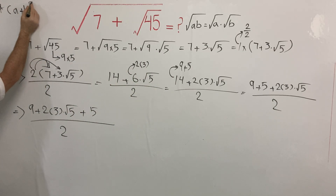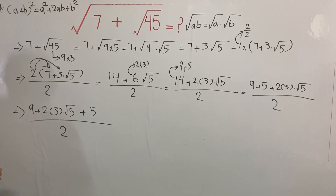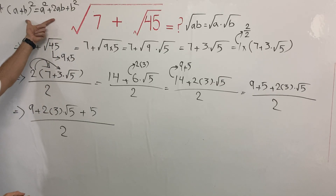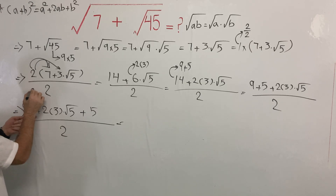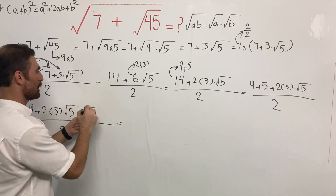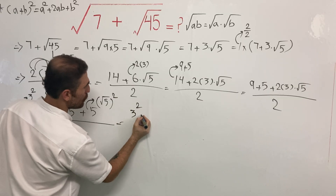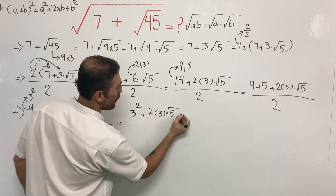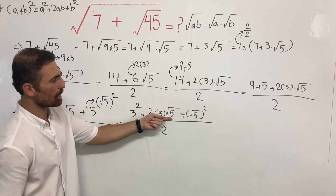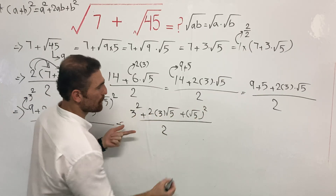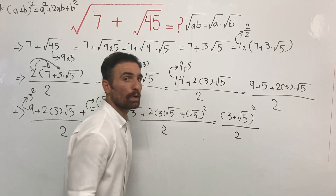Can you remember this algebraic identity? It says a plus b squared equals the first term squared, plus twice the product of the first and second terms, plus the second term squared. Now I'm going to use this identity to continue the solution. Nine can be written as three squared, and five can be written as the square root of five squared. So we have three squared plus two times three times the square root of five plus the square root of five squared, all over two — which is exactly the same as three plus the square root of five, all squared, over two.